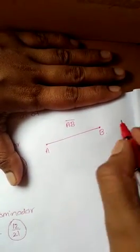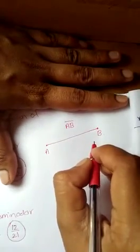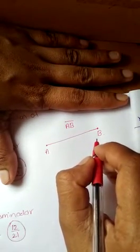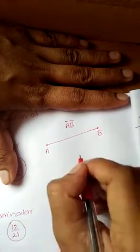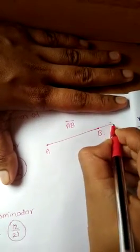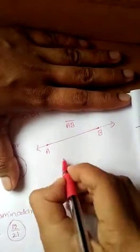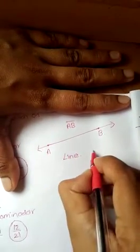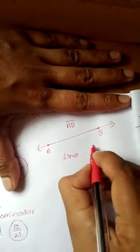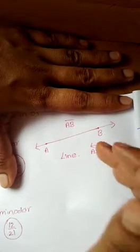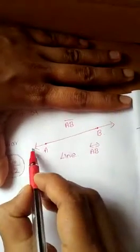Now, if we extend the two end points in either direction endlessly, we get a line. That means if we extend like this on both sides, the line segment becomes a line. It is denoted as AB with arrows on either side. The line has no end points — we can extend it on both sides indefinitely.